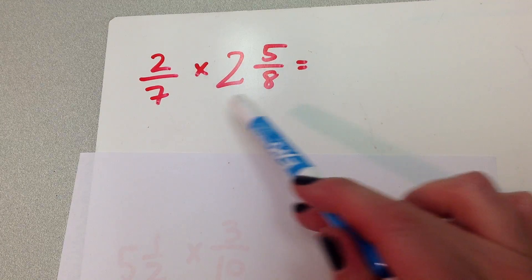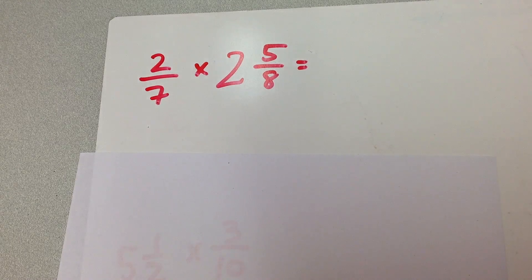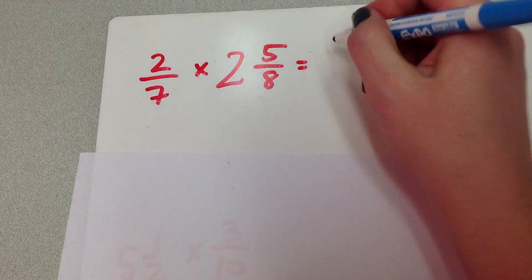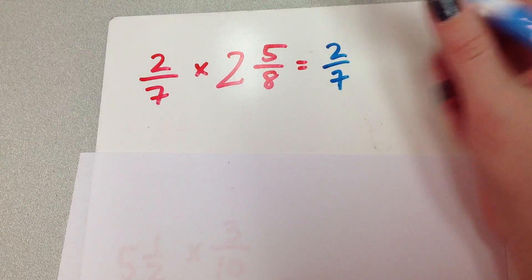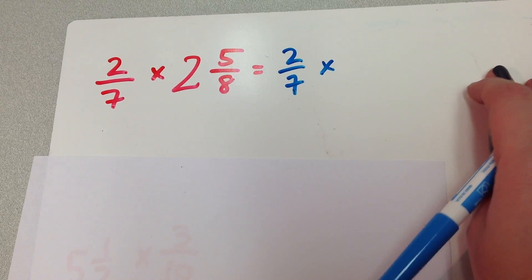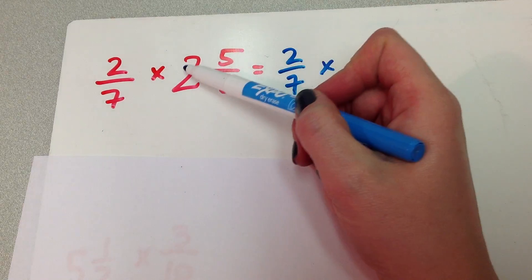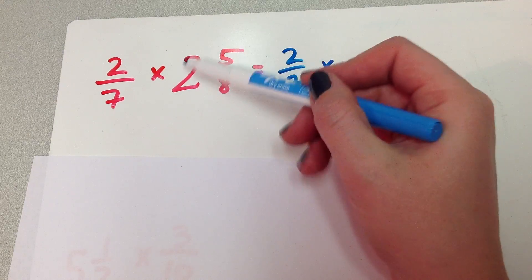See this guy right here? Got a mixed number? In order to deal with that, I have to convert it into an improper fraction. So I'm going to rewrite our problem over here. The 2 sevenths, he's okay — he's just a fraction, I'm going to leave him in the same format. Over here, though, I have to change this guy into an improper fraction.